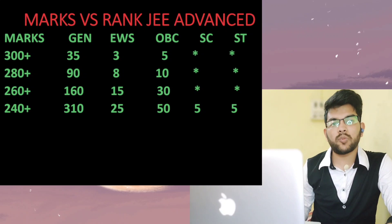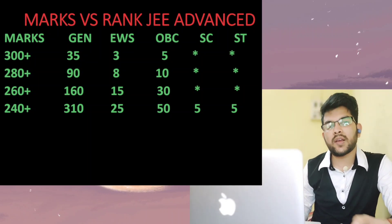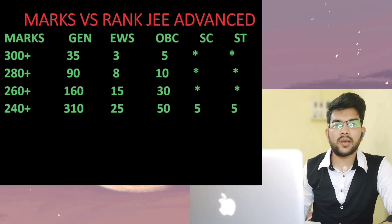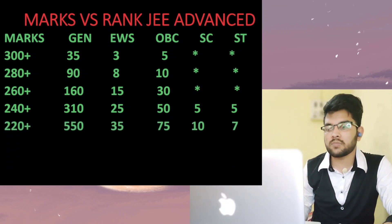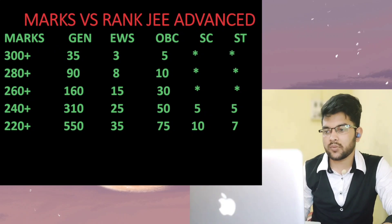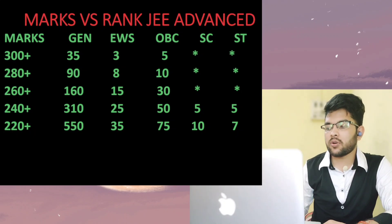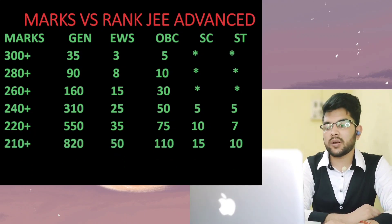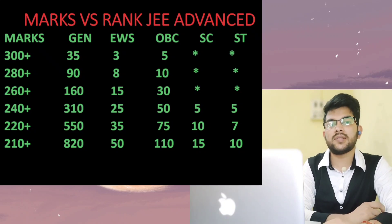One important note: irrespective of your category, you will also get a CRL rank. If you are from SC category, you will get both an SC rank and a CRL rank — this applies to all categories. General candidates receive only a CRL rank. For 220+ marks: general under 550, EWS under 35, OBC under 75, SC under 10, ST under 7. For 210+ marks: general under 820, EWS under 50, OBC under 110, SC under 15, ST under 10.